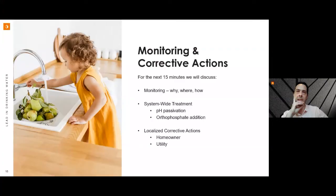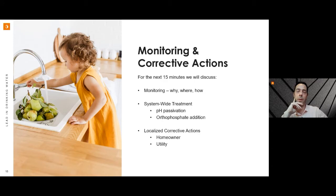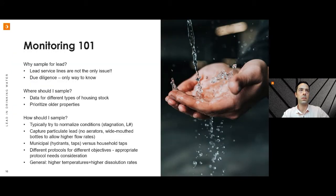Thank you, Leith. Over the next 15 minutes I'll talk about lead monitoring considerations, how to deal with elevated lead at a system-wide water treatment level — specifically pH passivation and phosphates — and localised corrective actions that homeowners and utilities can undertake. Looking first at monitoring: we need to sample in order to understand if drinking water reliably and consistently has elevated lead, which we might define as greater than the MAV of 10 micrograms per litre. Lead service lines are not the only issue. As the standards have come down, other lead-bearing fixtures like brass are also contributing to exceedances.